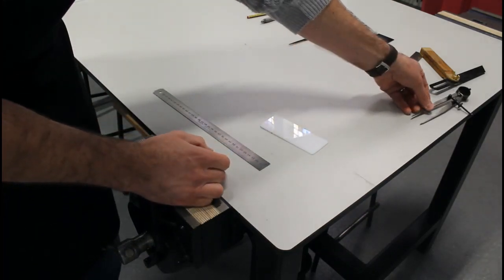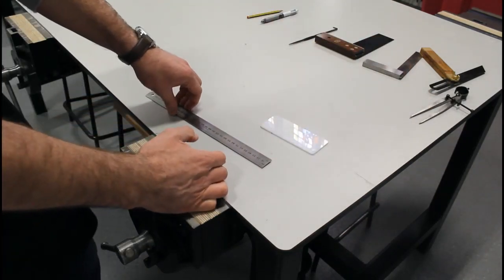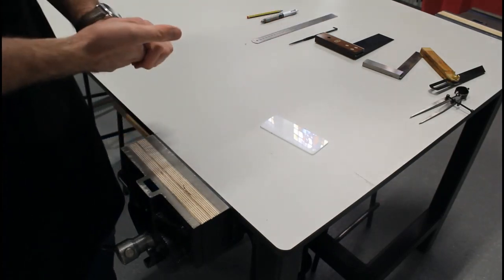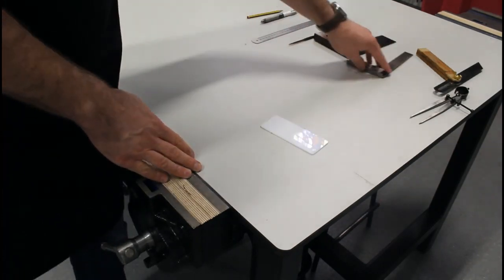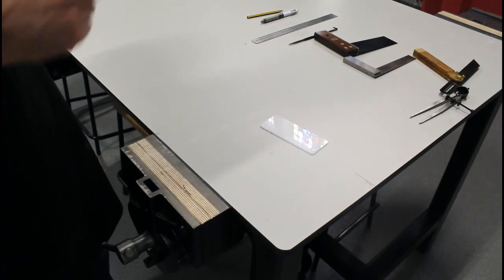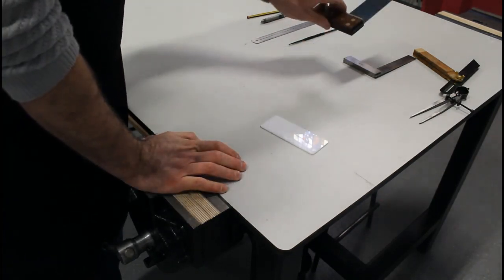So that is a range of our marking out material. Again, to identify them a little bit closer, especially the squares.